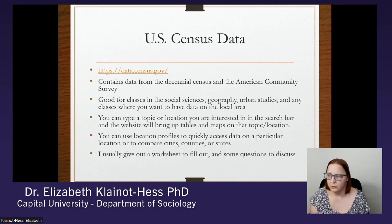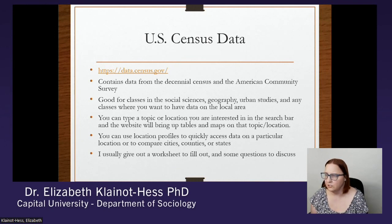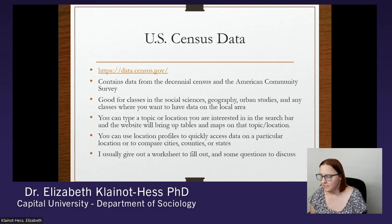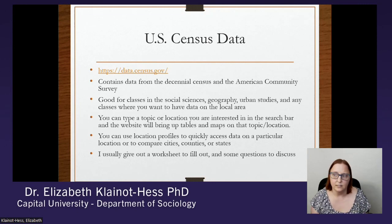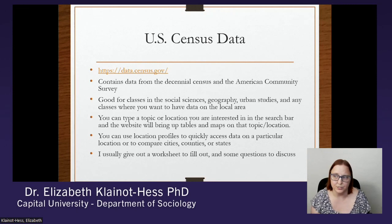The U.S. Census data website is one of these sources that I really like to use, and it's data.census.gov. This contains information from the decennial census, taken every 10 years, and the American Community Survey, which is conducted much more frequently on a smaller but still quite large sample size. It's good for classes in social sciences, geography, urban studies, and really any class where you want data on the local area or statistics about the U.S. You can type a topic or location in the search bar and the website will bring up tables and maps on that topic or location.